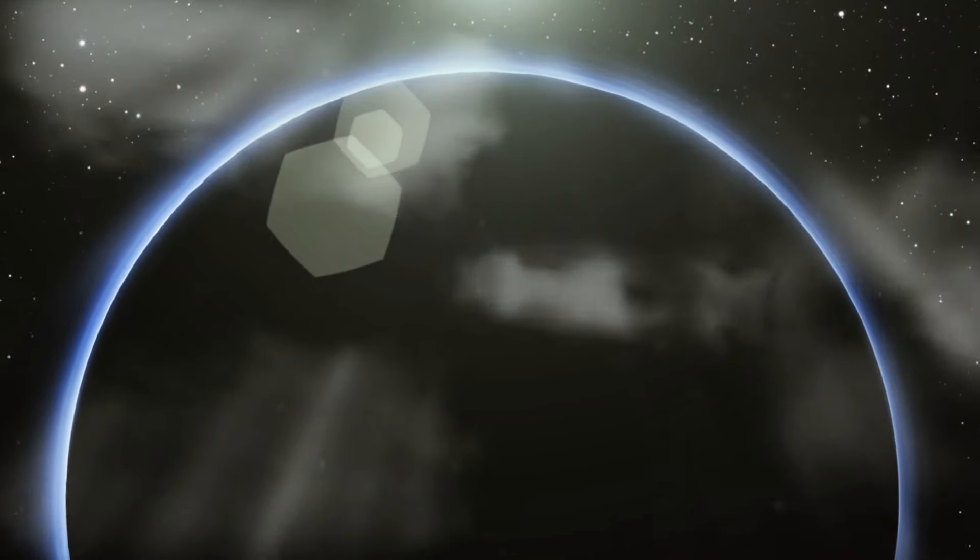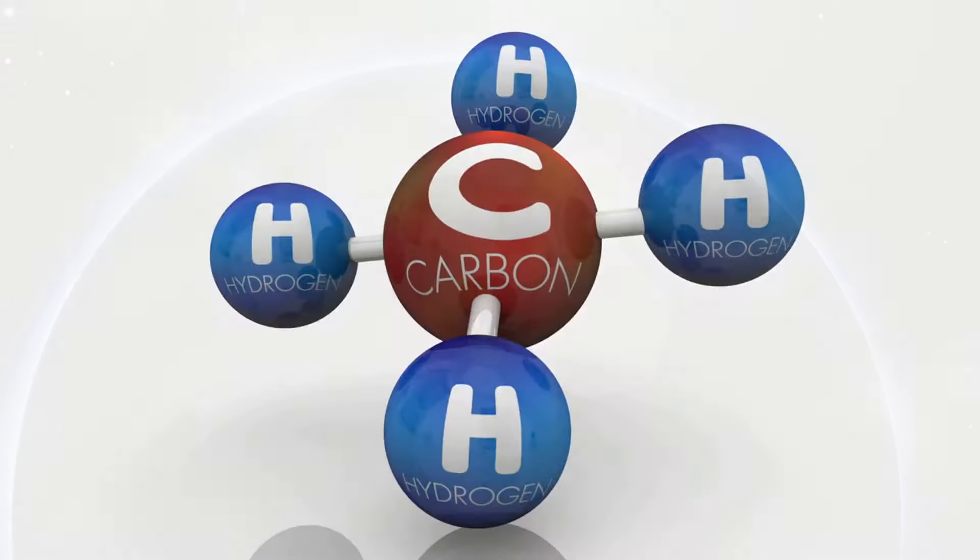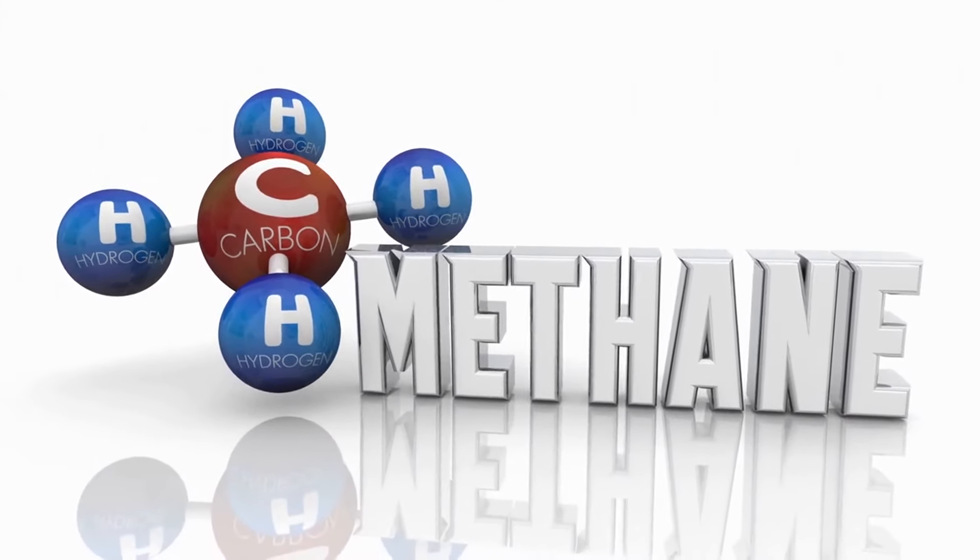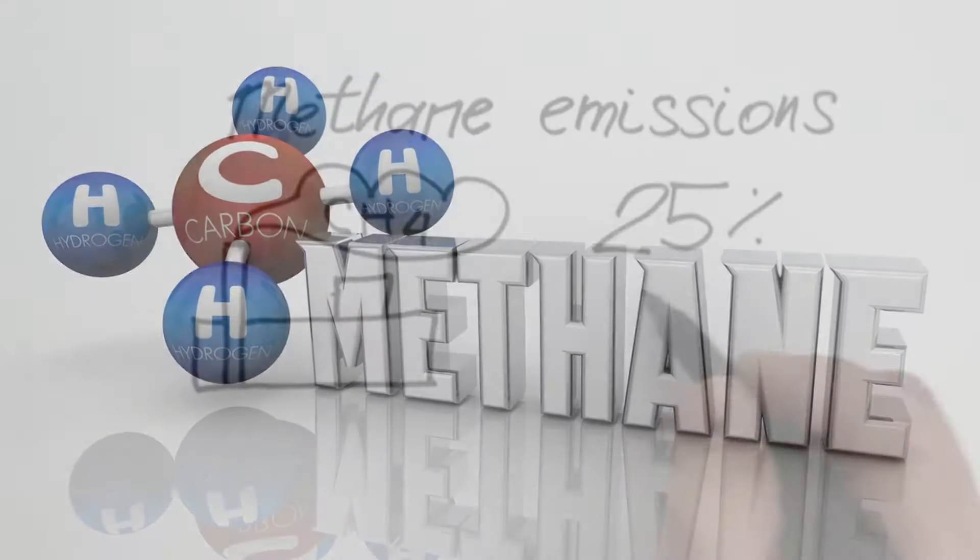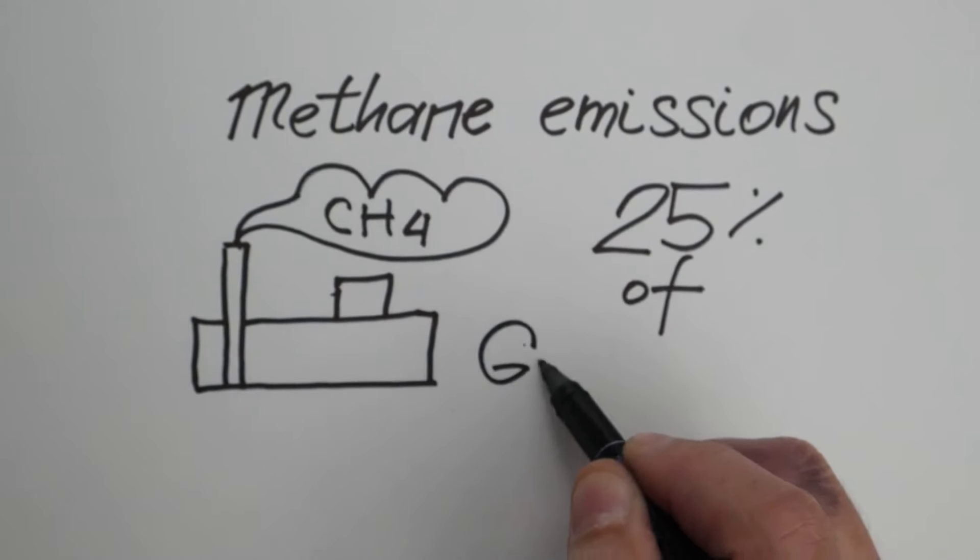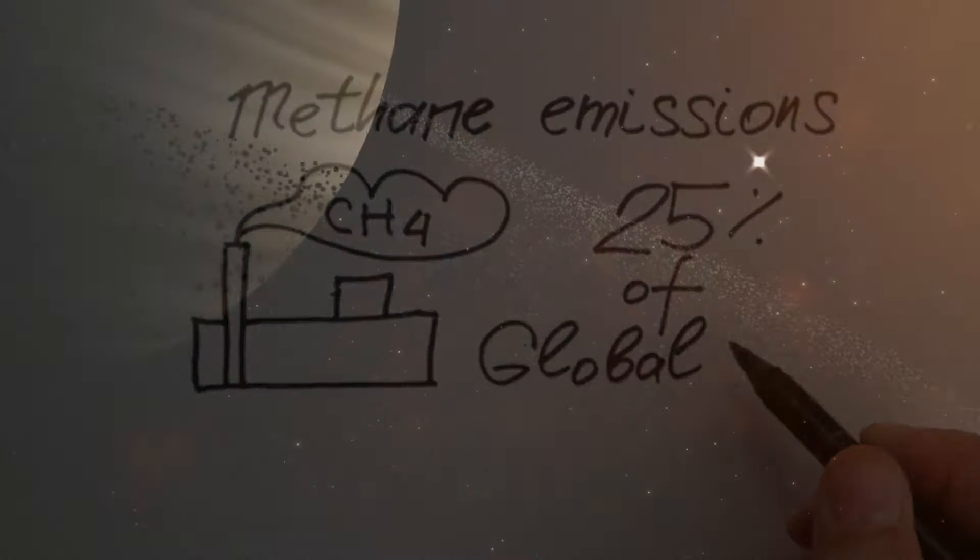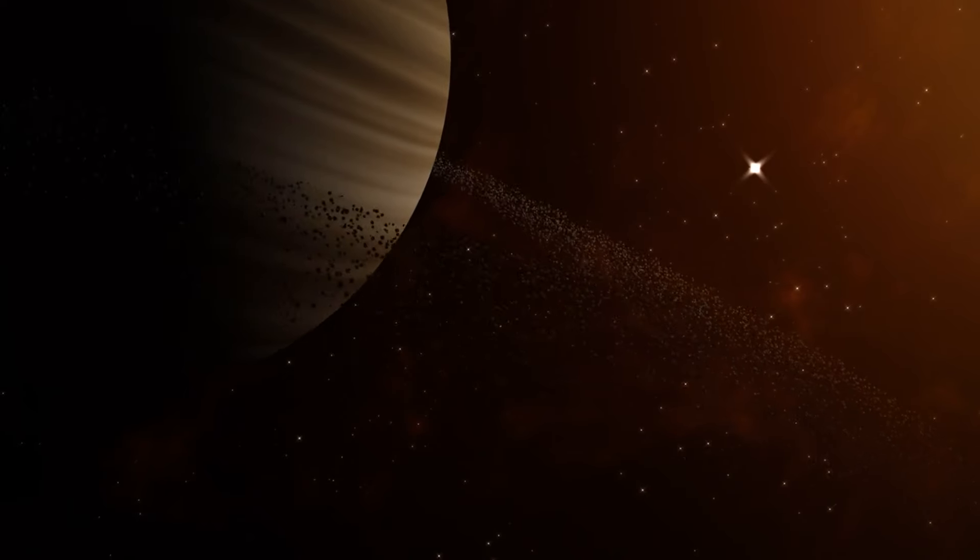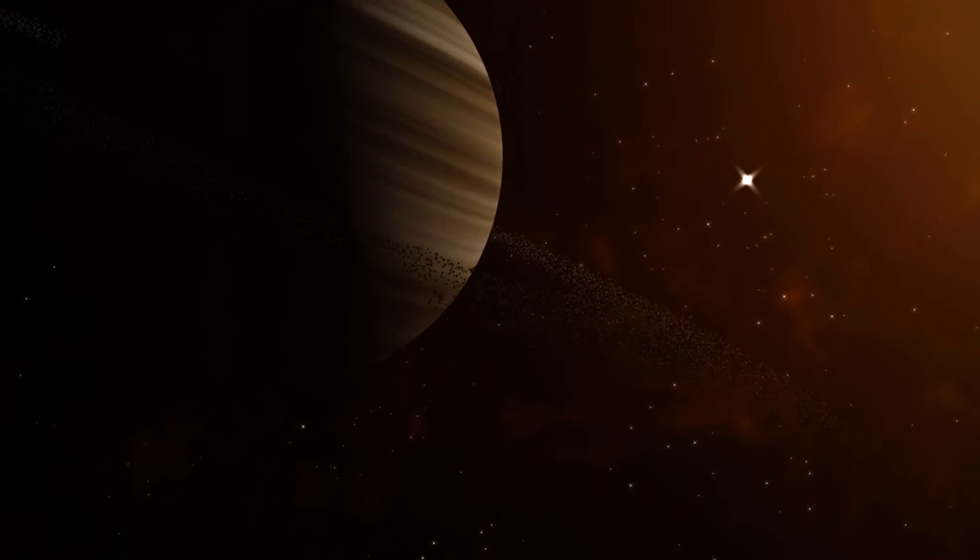The presence of methane in Pluto's atmosphere adds another layer of complexity and interest. Methane is a potent greenhouse gas, and even in trace amounts, it can significantly affect the thermal dynamics of the atmosphere. On Pluto, methane can absorb infrared radiation from the Sun, potentially warming the surface slightly more than it would be otherwise. This warming could influence the sublimation rates of nitrogen ice, contributing to the dynamic seasonal changes observed on Pluto.